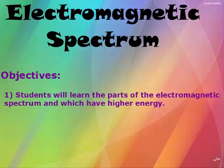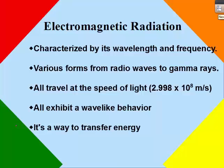The electromagnetic spectrum, like we said before, includes various forms from radio waves to gamma rays. They all travel at the speed of light, they exhibit a wave-like behavior, and it's a way to transfer energy.